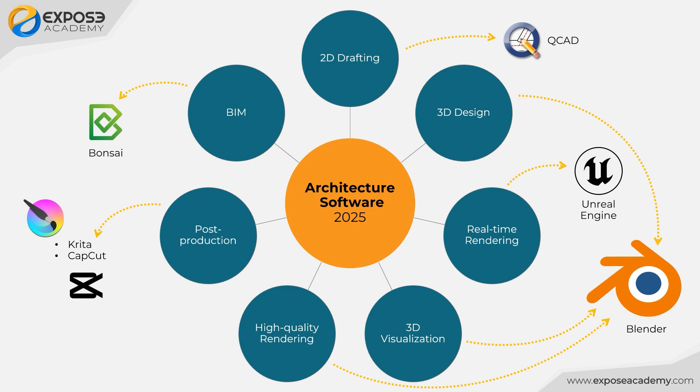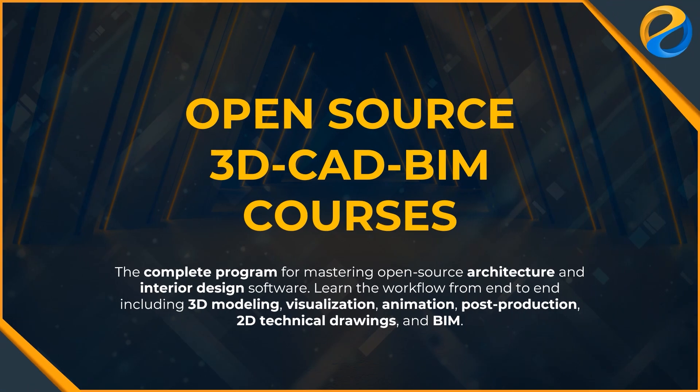So, those are the 7 categories of software used in architecture, the popular software, and also the open-source and or free alternatives. If you want to learn more about this alternative software, I am currently developing a complete program for mastering open-source architecture and interior design software. You'll be able to learn the workflow from end-to-end, including 3D modeling, visualization, animation, post-production, 2D technical drawings, and BIM. For more information, please check out the link in the description. I hope this video is useful. Wassalamualaikum.